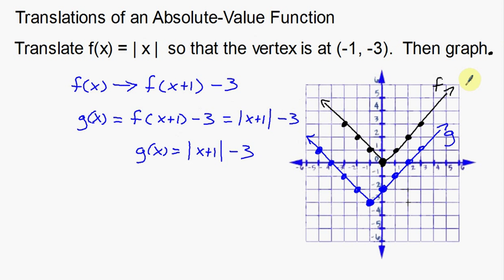That's a quick video on doing what I would call multiple translations of an absolute value function. What I mean by multiple translations is we're moving left 1 and then down 3 — so that would be multiple translations.